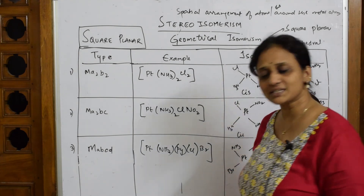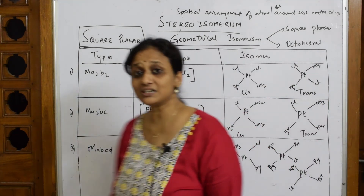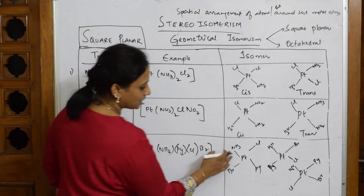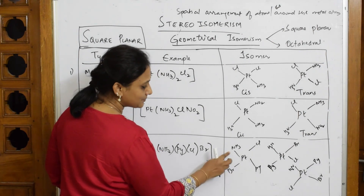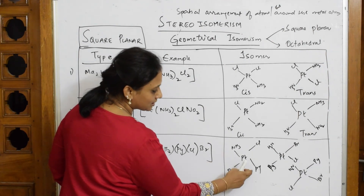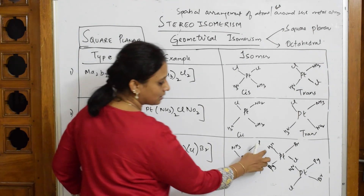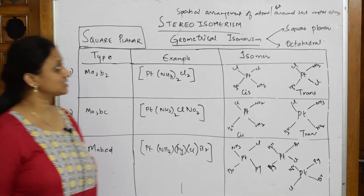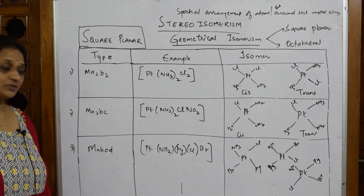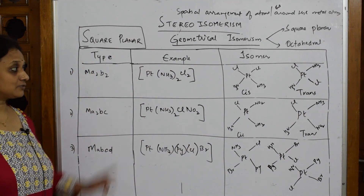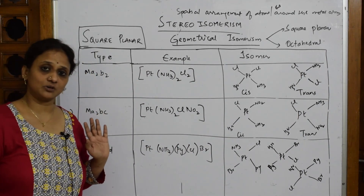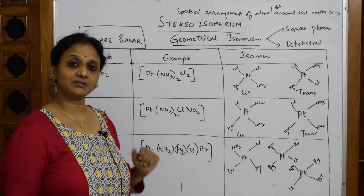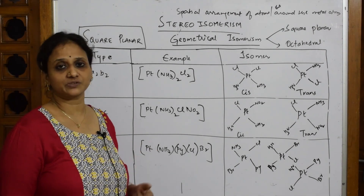So we get three trans isomers for the MABCD type. Because all four ligands are different, you cannot make a cis isomer here — we only write trans. To summarize geometrical isomerism for square planar complexes: cis means the same side, and trans means opposite.